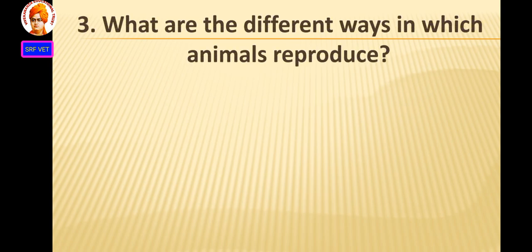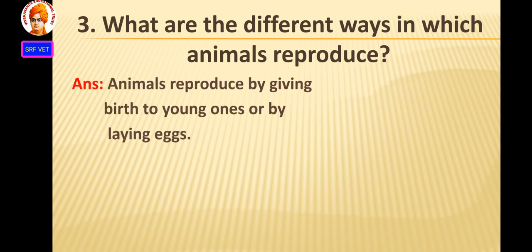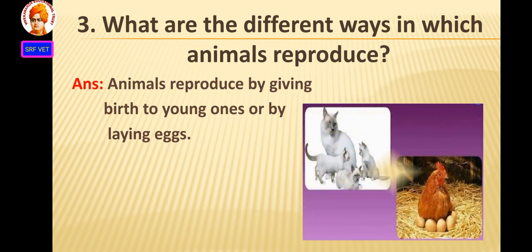Third question: What are the different ways in which animals reproduce? Animals reproduce by giving birth to young ones or by laying eggs.